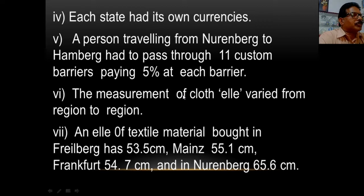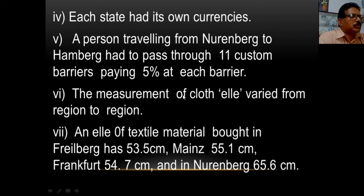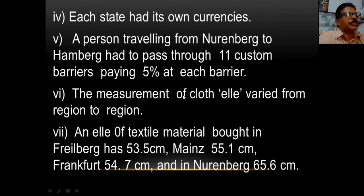The measurement of cloth — an 'elle' — varied from region to region. An elle of textile material bought in Freiberg was 53.5 cm. In Mainz it would be 55.1 cm, in Frankfurt 53.54.7 cm, and in Nuremberg 65.6 cm. So it was very difficult to do business.